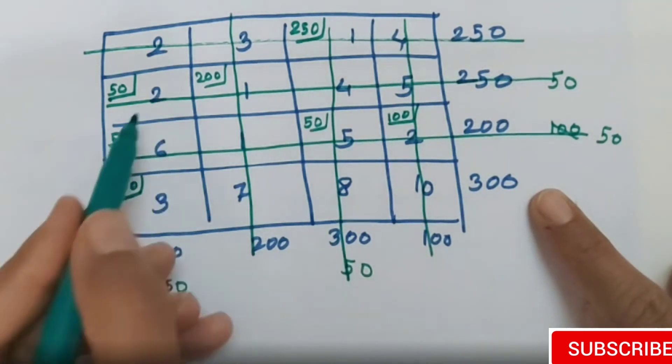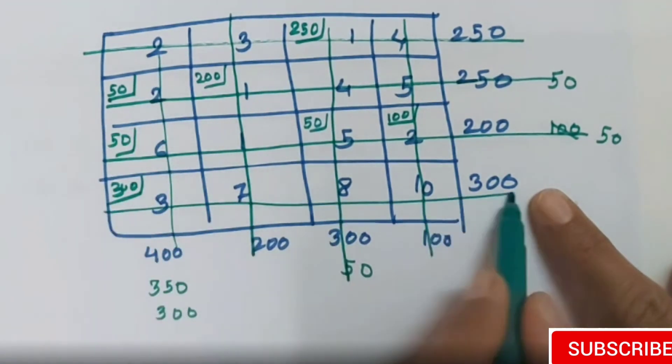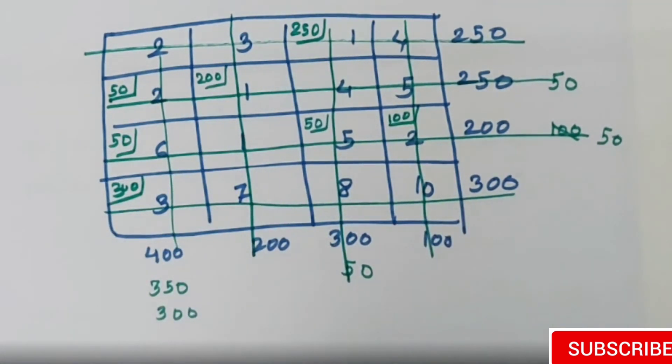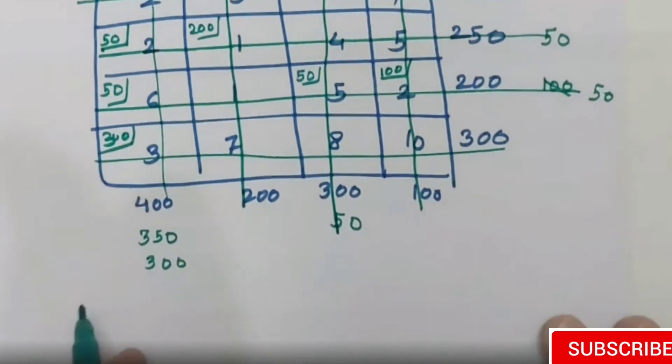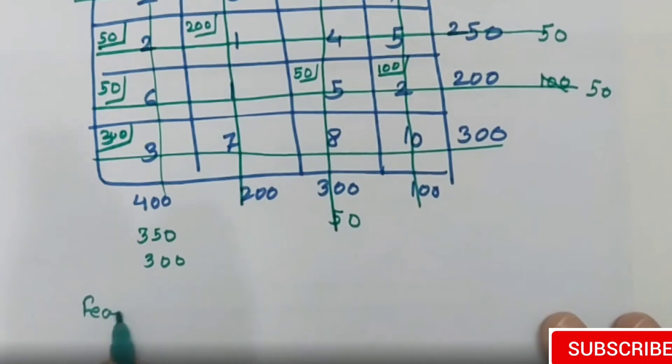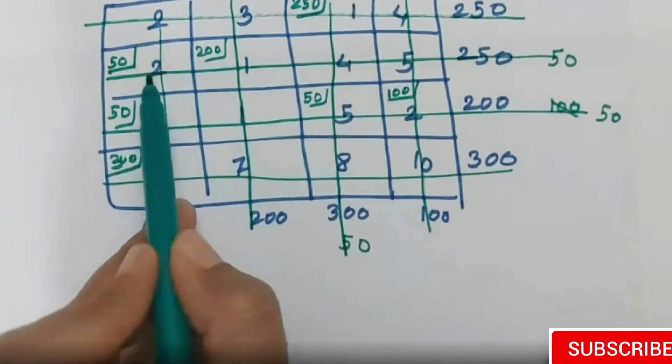This is already a balanced problem, so 300 will be assigned corresponding to 3. Its corresponding row and column both cancel. Everything cancelled means our complete condition holds here.